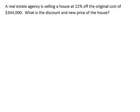In the next problem, we have a real estate agency selling a house at 22% off the original cost. The original cost is $344,000. What is the discount and new price of the house? Recall that since it's a discount, that's going to be something that gets taken off, so they're going to sell it for less than the original cost. We start the exact same way because it doesn't make a difference whether it's discount or markup. You first have to figure out what 22% of that is.